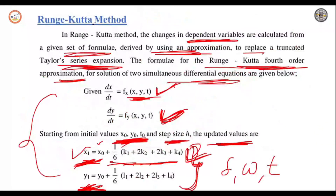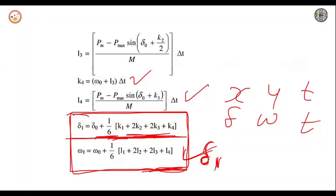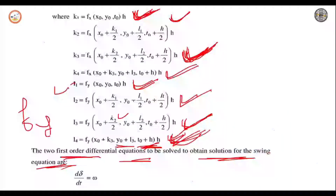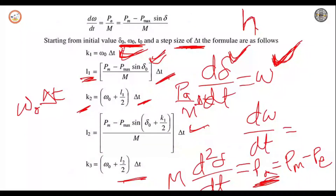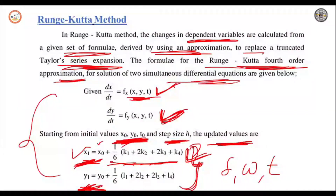This is the Runge-Kutta method which gives the numerical solution to the swing equation. We can find changes in delta and angular velocity omega with respect to time. These equations are to be directly remembered; there are no proofs required in the syllabus. This is one of the numerical methods to find the solution to the swing equation.